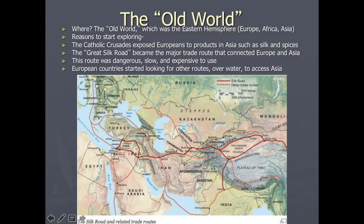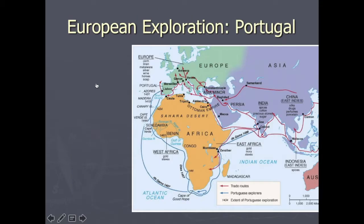That alternative would prove to be water routes using the ocean. Going north of Europe would run into frozen water. Going west toward the Americas was largely unexplored. Most people did not believe the earth was flat or that you'd fall off the edge, but it was still uncharted territory. The first option people would take was to go around Africa. The first country to really pioneer this idea was Portugal.